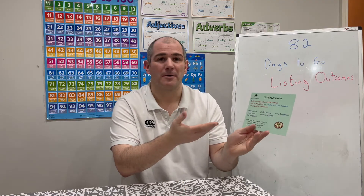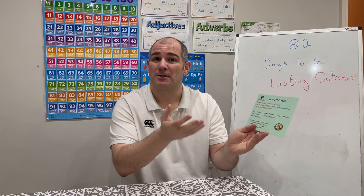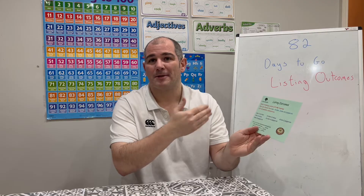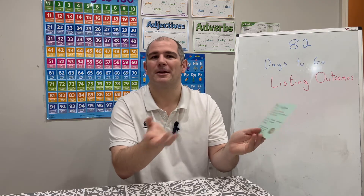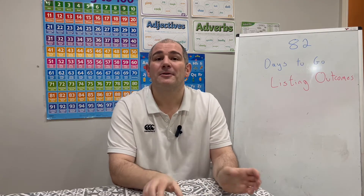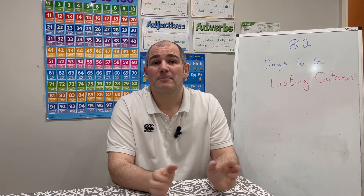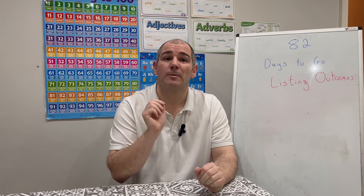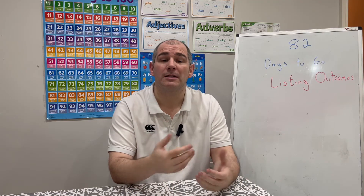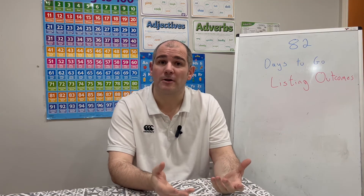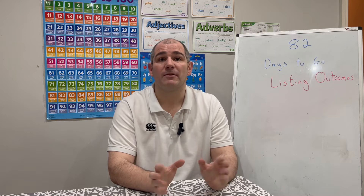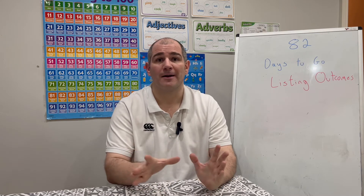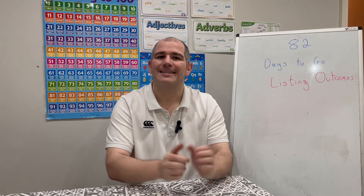On the revision card you've got a question about a pizza and the pizza toppings that Emily can choose — ham and chicken, ham and olives, ham and pepperoni and so on. I'm going to go through some questions on listing outcomes. Feel free to pause the video and give the questions a try yourself. At the end of the video I'll talk about the practice questions and where you can find those. Okay, let's get started.